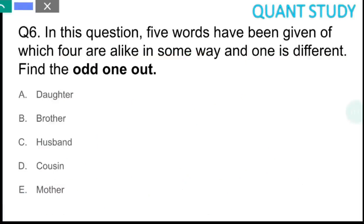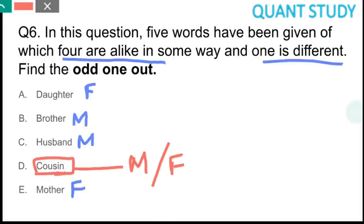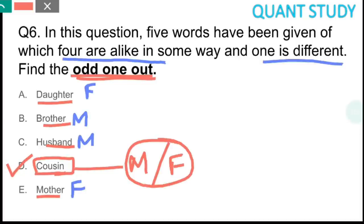Question 6 is also an odd one out. The options are daughter, brother, husband, mother, and cousin. One approach is to check gender. Daughter is female, brother is male, husband is male, mother is female — all have a definite gender. However, 'cousin' is a gender-neutral term — a cousin can be male or female; we don't say 'cousin brother' or 'cousin sister,' just 'cousin.' So the gender is not specified for cousin. Therefore the odd one out is option D, cousin.